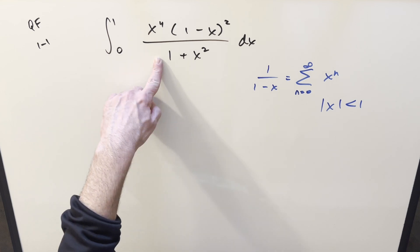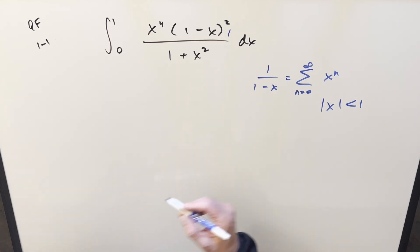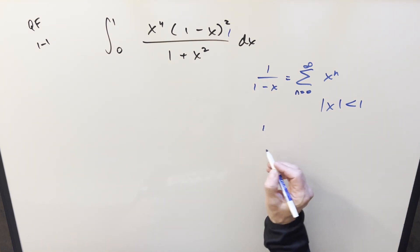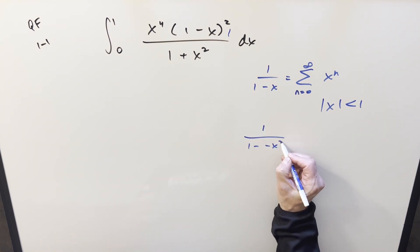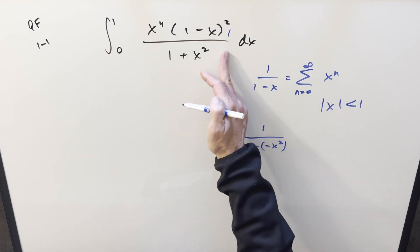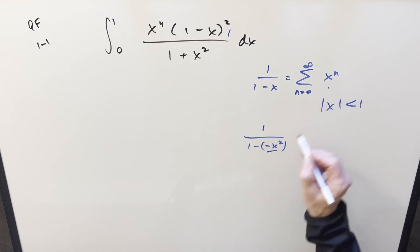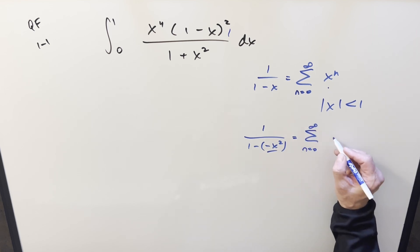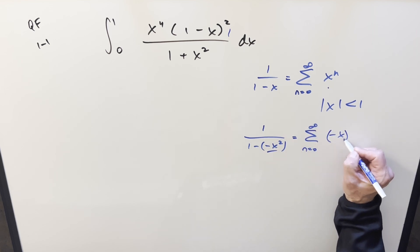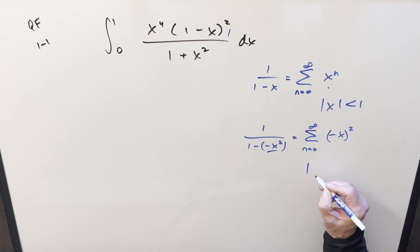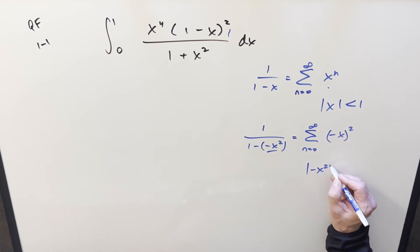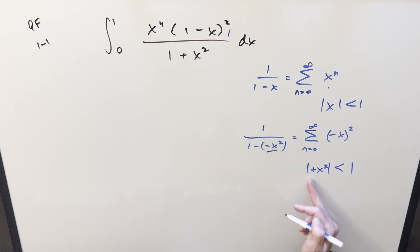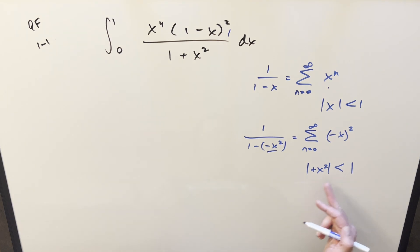For convergence we need the absolute value of x to be less than one. So rearranging what we have, if I create a one in the numerator we can look at this as one over (1 plus x squared). I can write it as one over (1 minus (minus x squared)), and then plugging into the geometric series formula we get the sum from n equals zero to infinity of (minus x squared) to the n. For convergence we need the absolute value of (minus x squared) to be less than one.